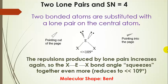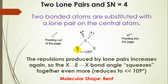For steric number four, we can also have two lone pairs on the central atom. One example is water, H₂O, which has two lone pairs on the oxygen. Those lone pairs repel each other and also repel the bonded atoms, resulting in a bond angle quite a bit less than 109 degrees — there's even more repulsion and the bond angle is squeezed together even more. This is also called a bent shape, with the same name as the bent shape for steric number three, except the bond angle is even smaller due to two lone pairs with sharp elbows.